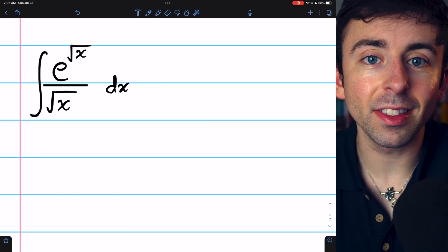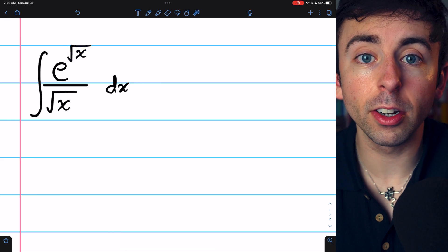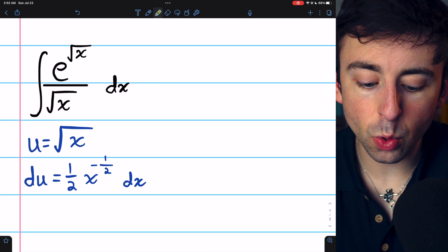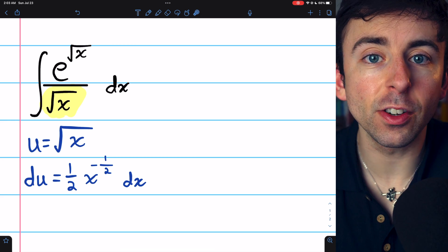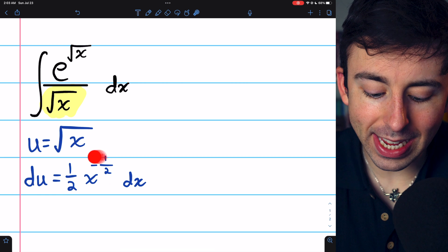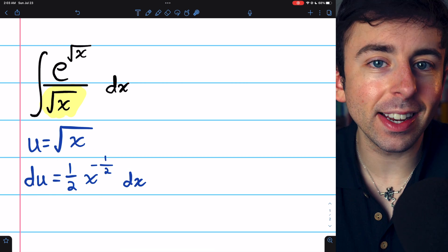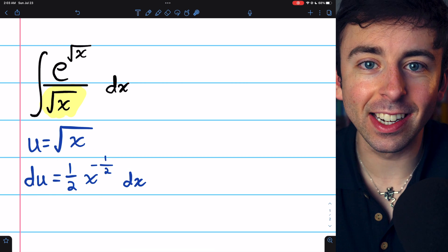You have to investigate the derivative of each choice to determine which is correct. If we let u equal this root x in the denominator and then take the derivative, this is what we get, which is not represented anywhere else in the integrand.